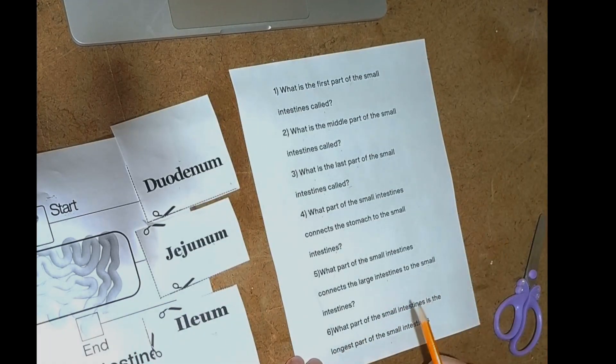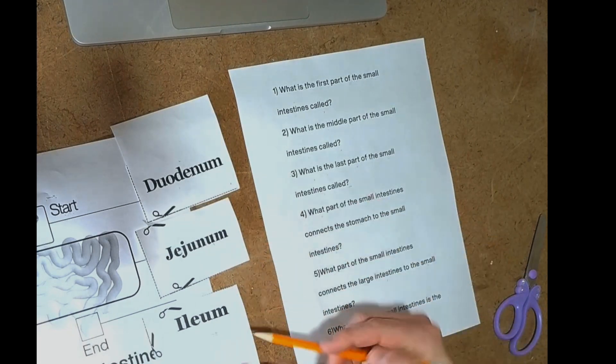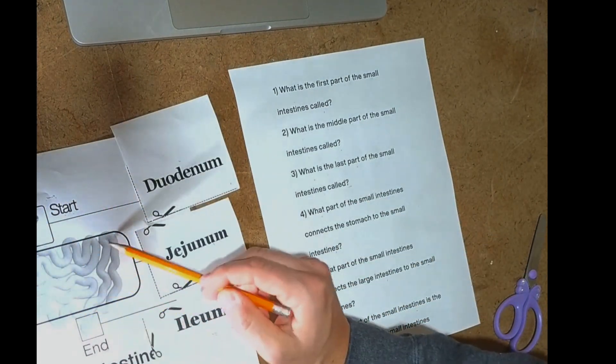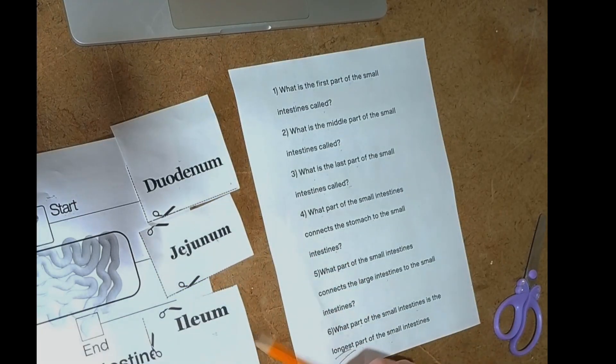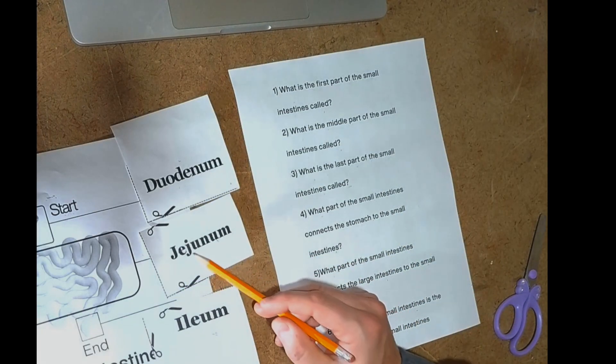And finally, you all did so good. What part of the small intestines is the longest part of the small intestine. It's the longest. Let's look over here. Look how long that middle section is. What do you think? It's going to be the jejunum.